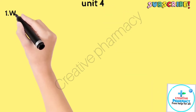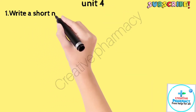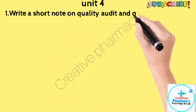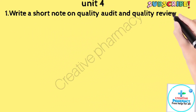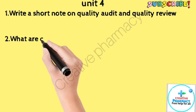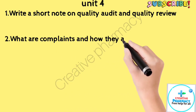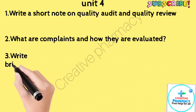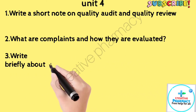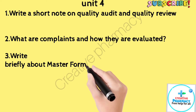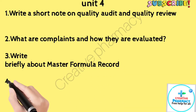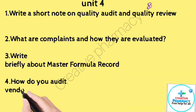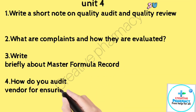Unit 4. Question 1: Write a short note on quality audit and quality review. Question 2: What are complaints and how they are evaluated? Question 3: Write briefly about master formula record. Question 4: How do you audit a vendor for ensuring purchase specification?